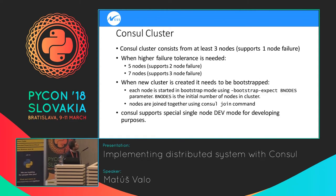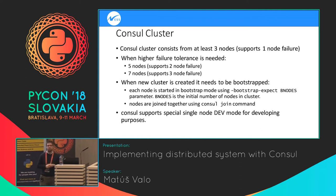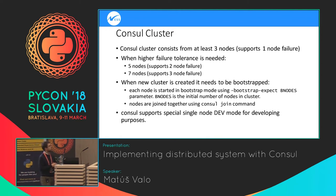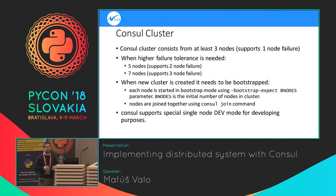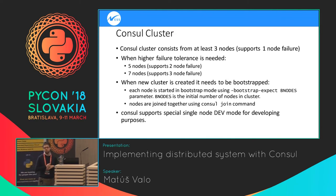Let me start with creating a Consul cluster, because this is the most important point. Consul needs at least three nodes; otherwise you cannot have failure tolerance. If you want more than one node failure tolerance, you can add more nodes — five nodes allows two down, seven nodes allows three down. Building this cluster follows two steps.